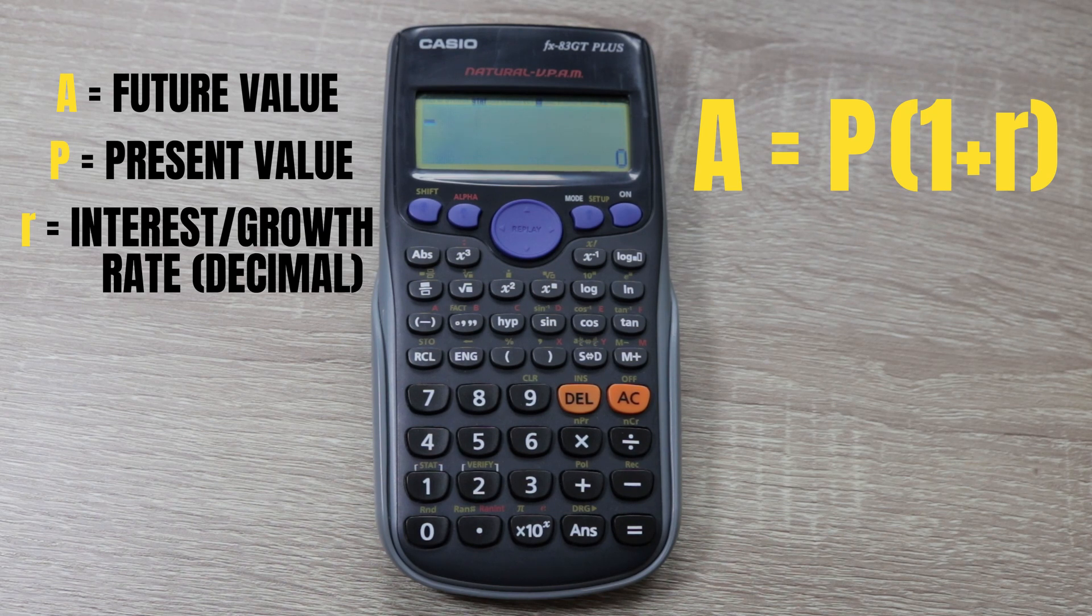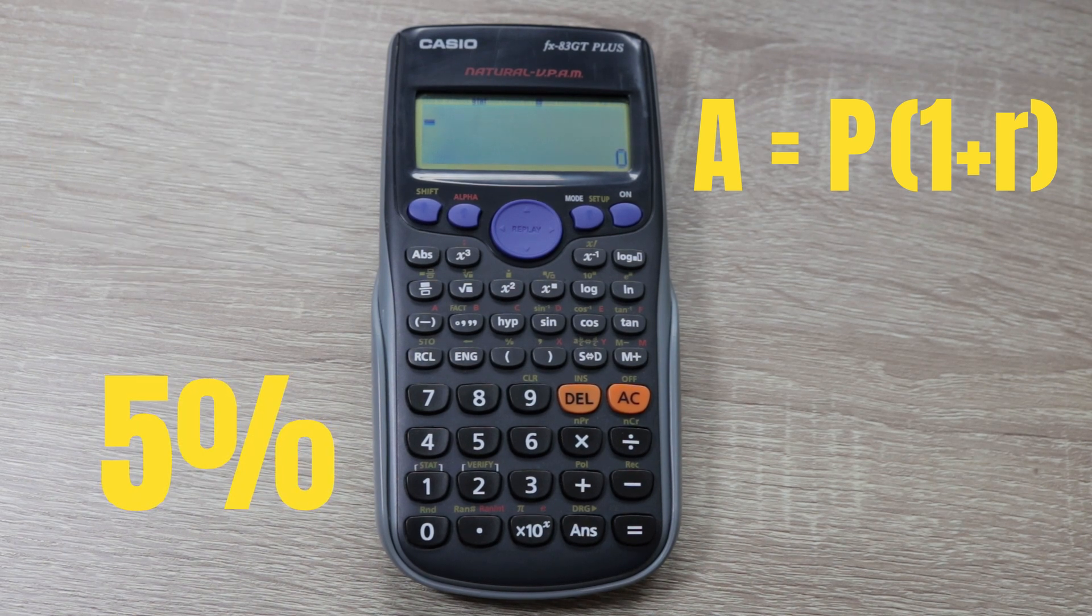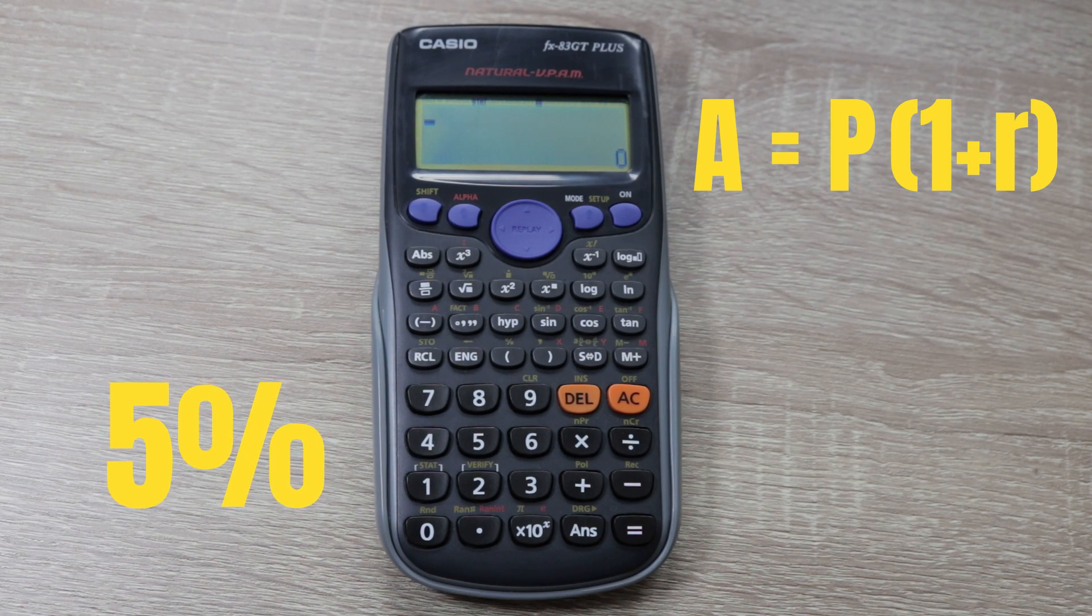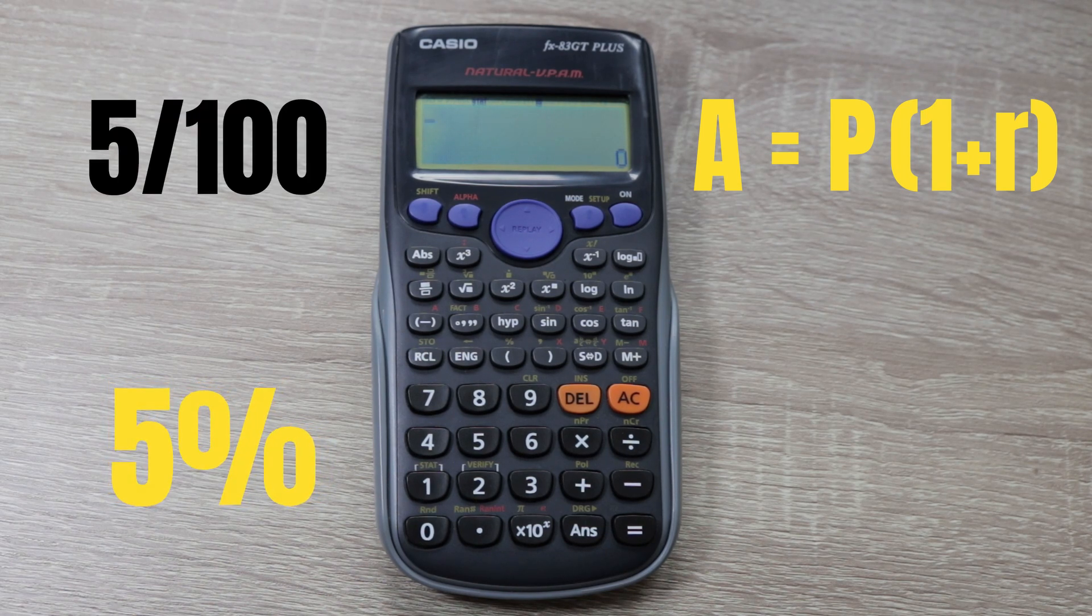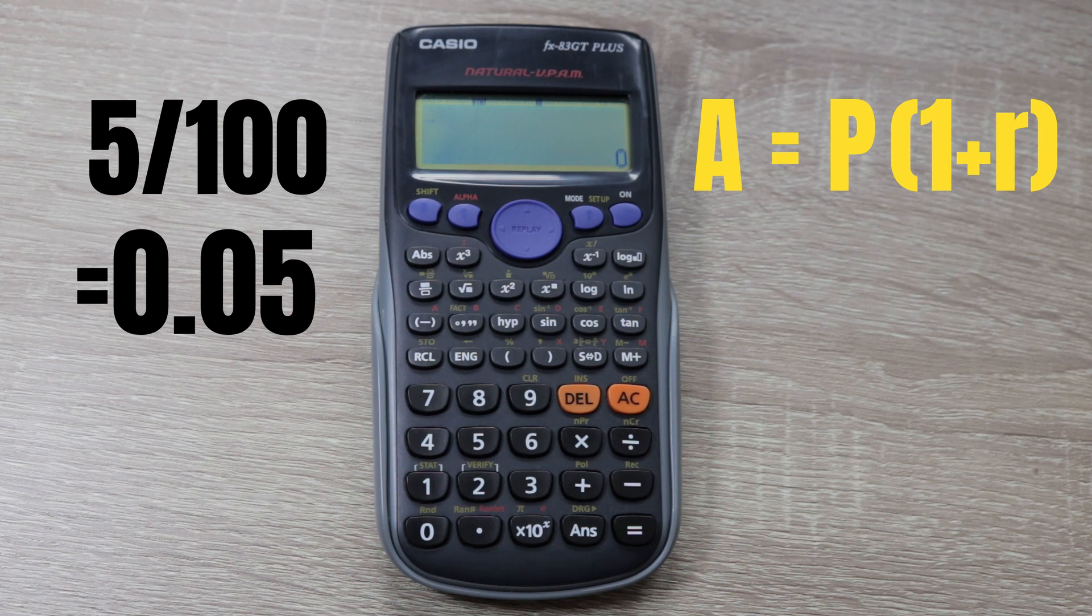That will be the rate of interest we'll be adding to our present value. In this case we're going to use 5%, so to calculate that as a decimal we take 5 and divide by 100 to get 0.05.